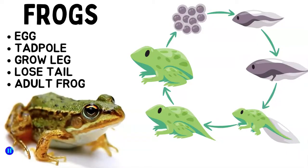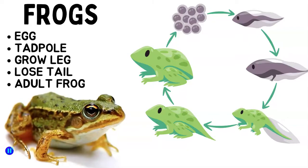Let's look at another animal — frogs. They have a different life cycle. Like butterflies, they also start in eggs, but theirs start in the water. And when they hatch, they become tadpoles, which look a little like fish. And as they grow, they develop legs, they lose their tails, and eventually they become adult frogs and they leave the water.